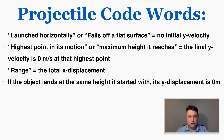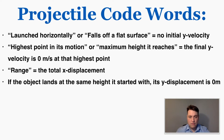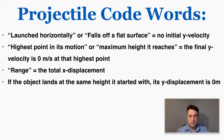There are some code words for projectile motion problems. 'Launched horizontally' or 'falls off a flat surface' means the initial y velocity is zero. 'Highest point' or 'maximum height' is where the y velocity equals zero — the final y velocity is zero at that point, not the x velocity, which stays the same. The 'range' is the total x displacement of a projectile. And if the object lands at the same height it started, its total y displacement is zero, because it went up and came back down to the same position.